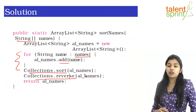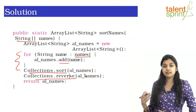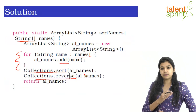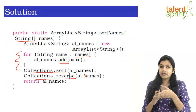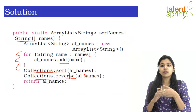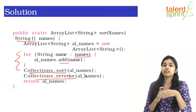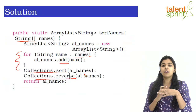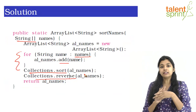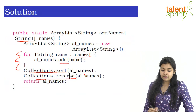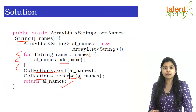When you call Collections.reverse on your ArrayList, it reverses the list. Since the ArrayList was already sorted in ascending order, reversing it gives you all the names in descending order. Finally, you return the names — fairly simple!